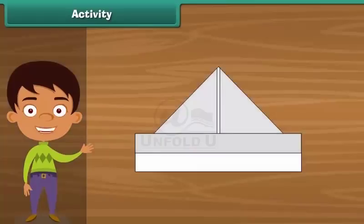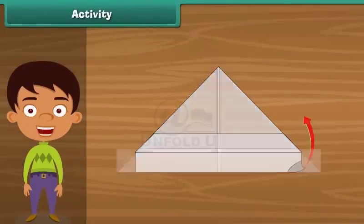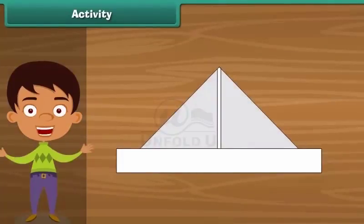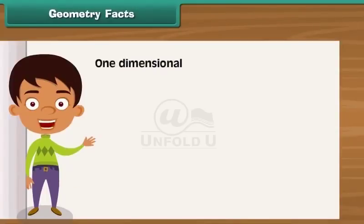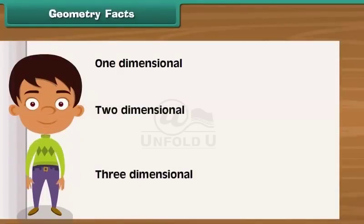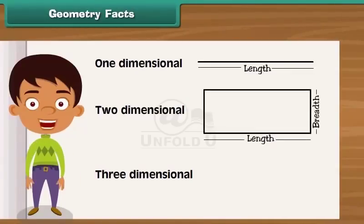Geometry facts are generally divided into three parts: one-dimensional, two-dimensional, and three-dimensional. The one-dimensional geometry is called the line. Lines have only length. Two-dimensional geometry is about length and breadth. Three-dimensional geometry is about length, breadth, and height.